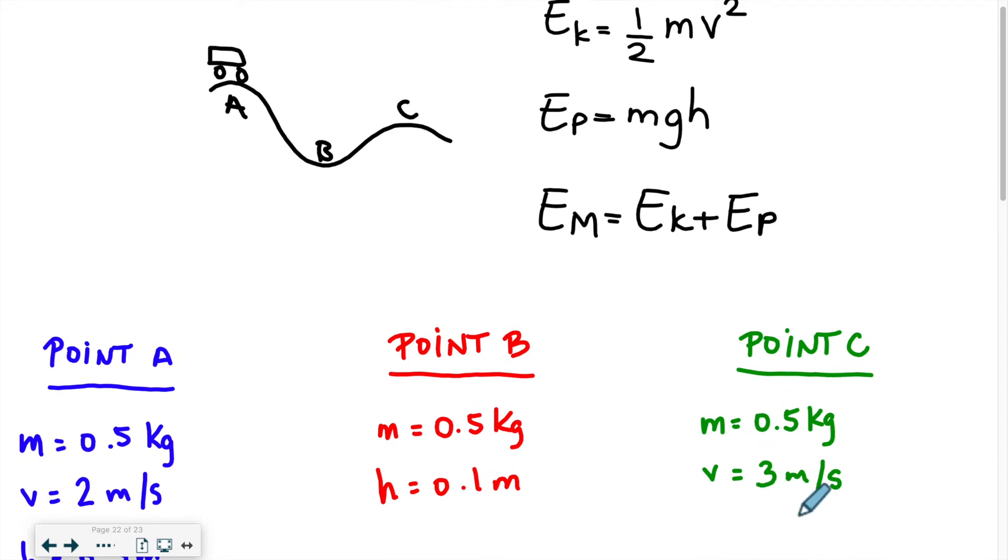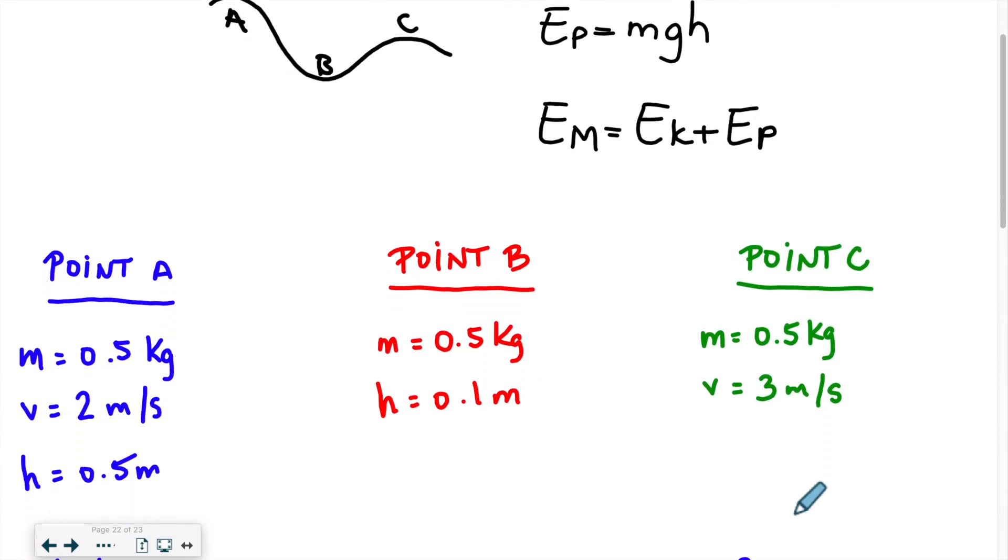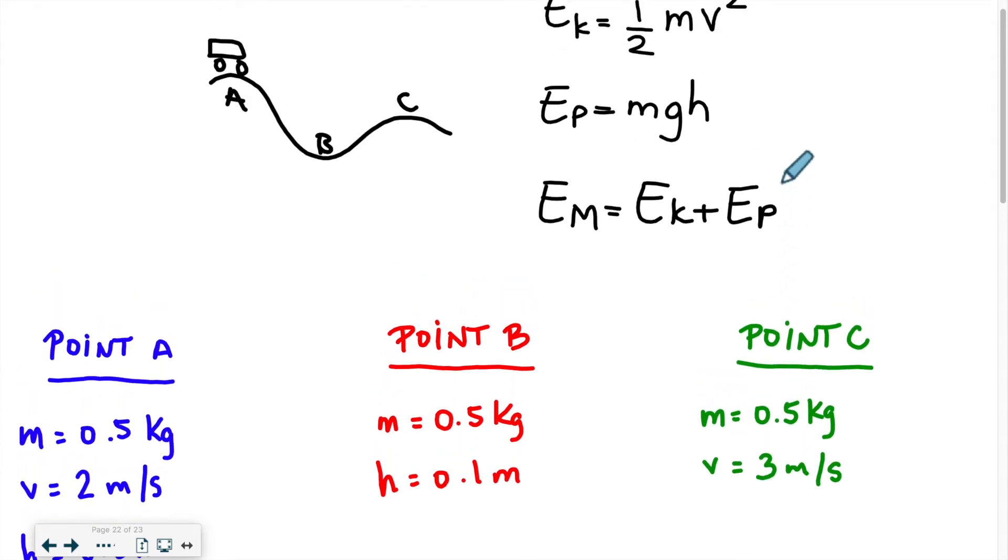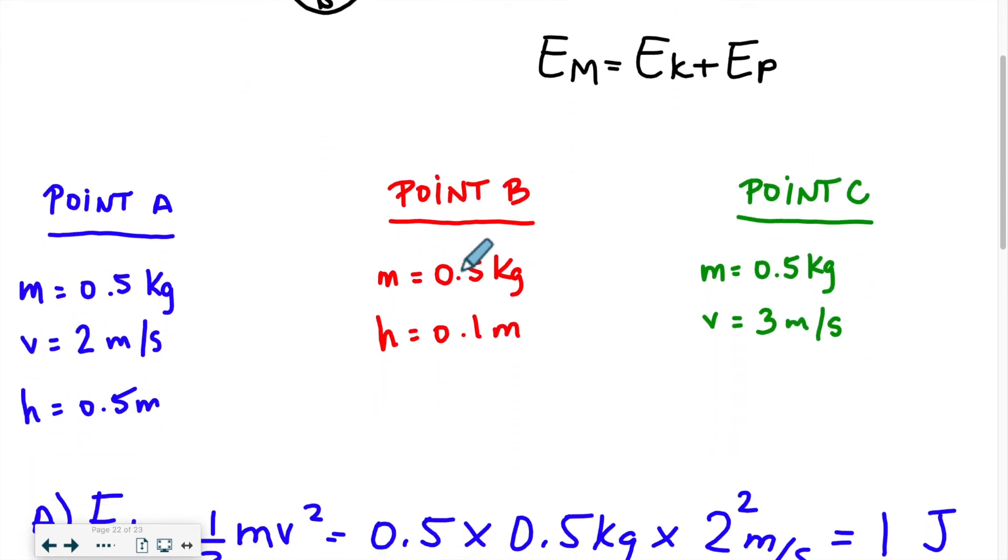So what's our next step? We're going to take each location one at a time and solve for the three values. For point A, we have the mass, the velocity, and the height. If we take a look at our equations with mass and velocity, we can solve for the kinetic energy. We have the mass and we have the height. We know that this is happening on Earth, so the gravity value is 9.8. So we have everything we need to solve for EP, and with those two values, we'll be able to calculate the mechanical energy.